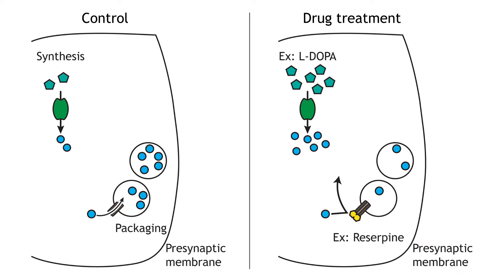Neurotransmitter packaging is another site of possible drug action. Reserpine, which has been used to treat high blood pressure, blocks the transport of the monoamine transmitters into vesicles by inhibiting the vesicular monoamine transporter. This decreases the amount of neurotransmitter stores and the amount of neurotransmitter released in response to an action potential.